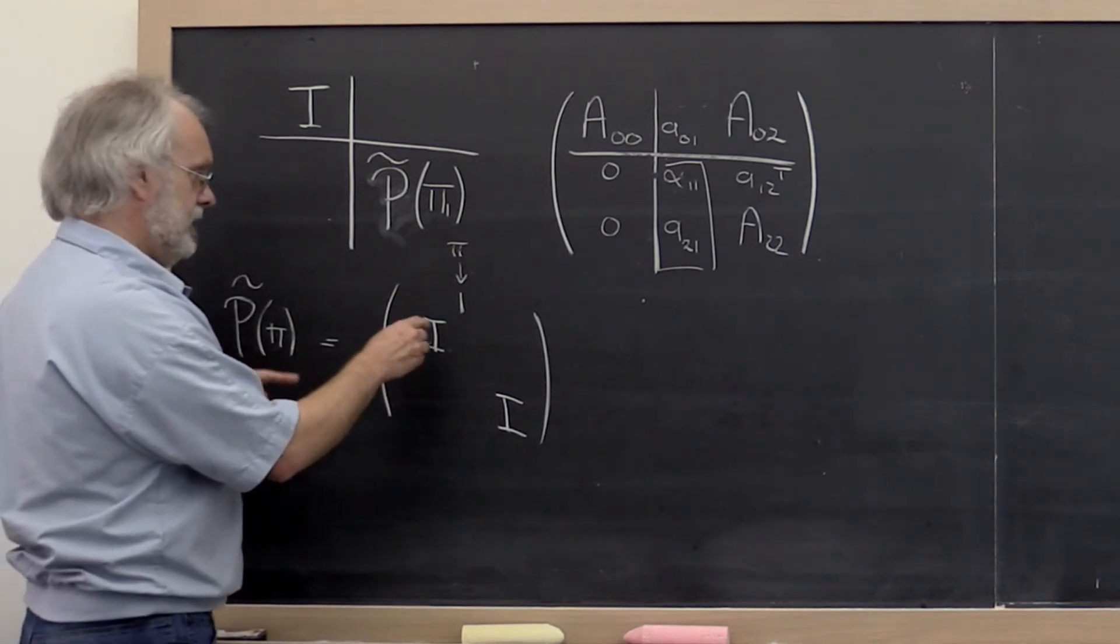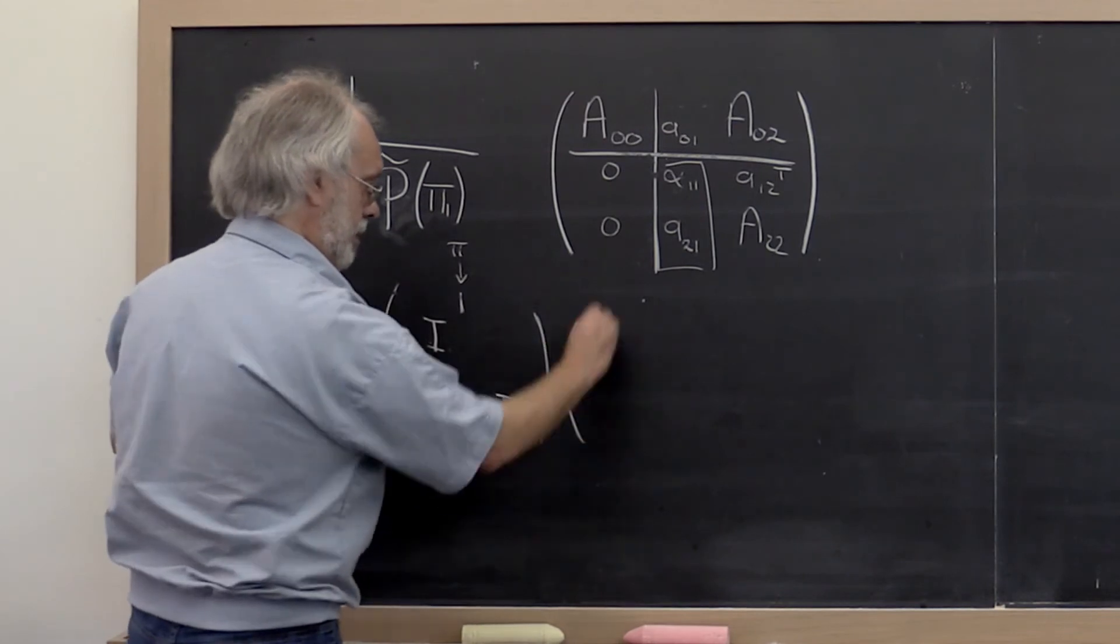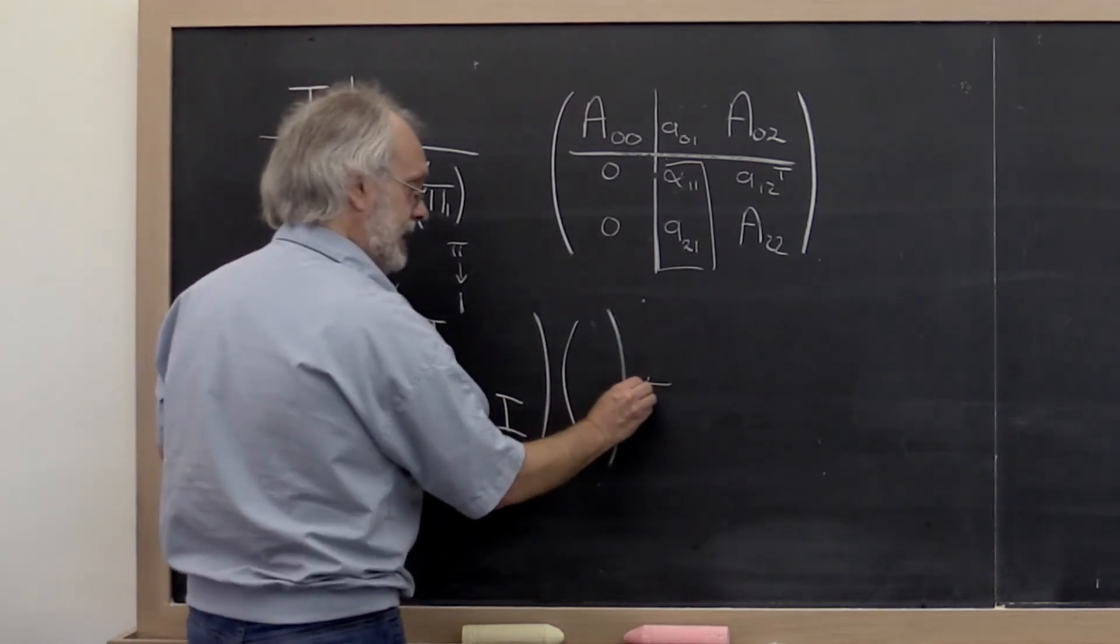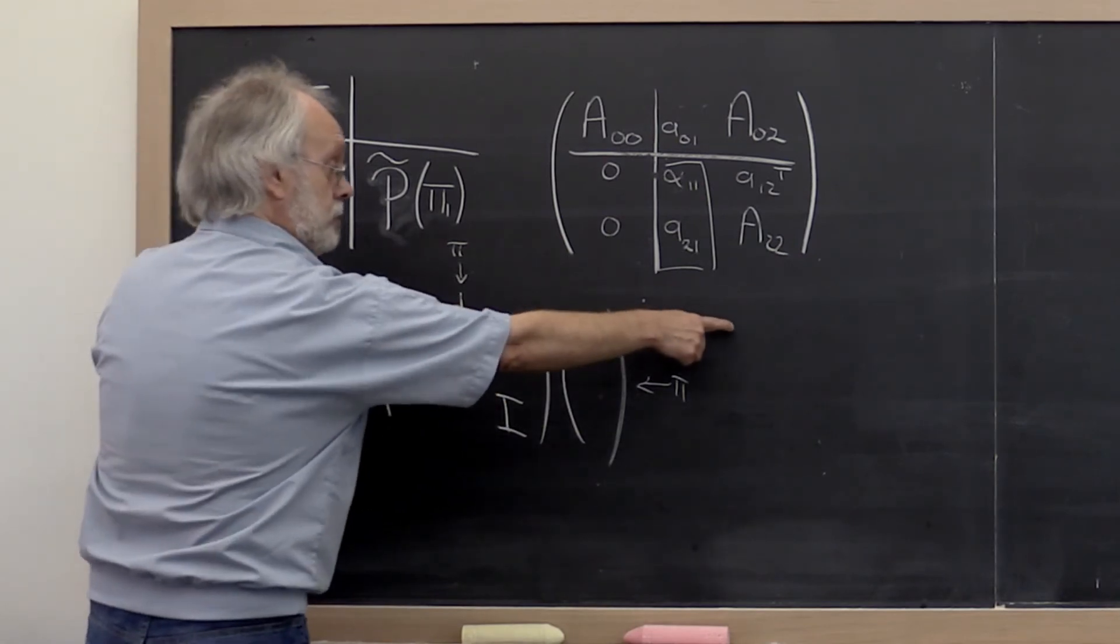Because what does this do? This here goes and picks out the entry, when applied to a vector, the entry indexed with pi and places it in the first position.